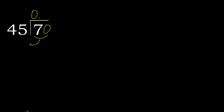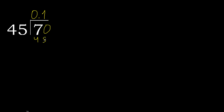70 is not less, therefore work with 70. 45 multiplied by which number is nearest to 70 but not greater? 45 multiplied by 2 is 90 — 90 is greater. Multiply by 1 is 45, which is not greater. Subtract: remainder is 25.